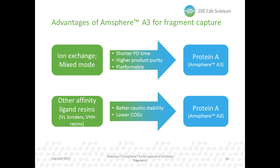Finally, I want to compare our protein A resin with other types of resins used for the capture of antibody fragments. Ion exchange resins and mixed-mode resins have the possibility of higher capacity. However, the large advantage of a protein A resin is that process development time will be much shorter, allowing new molecules to reach the market faster. Since it's an affinity step, the purity is already very high after this capture step, combined with over 95% recoveries, which will not be possible with these other resin types. An affinity chromatography step has the potential to be used as a true platform for antibody fragment capture.